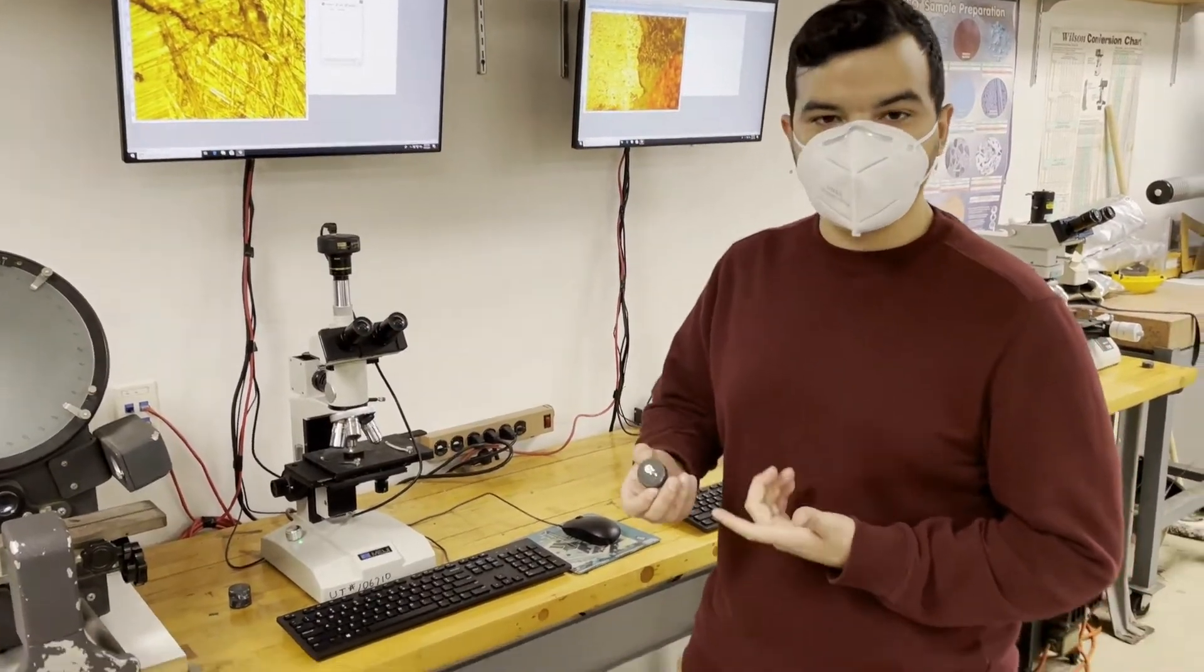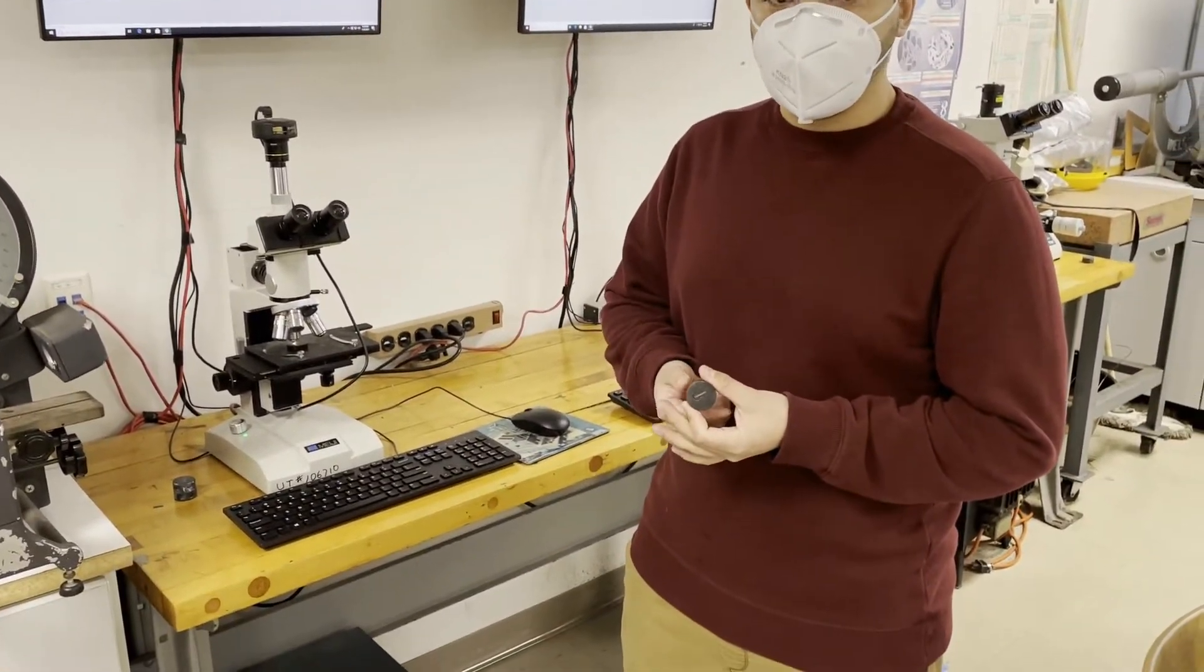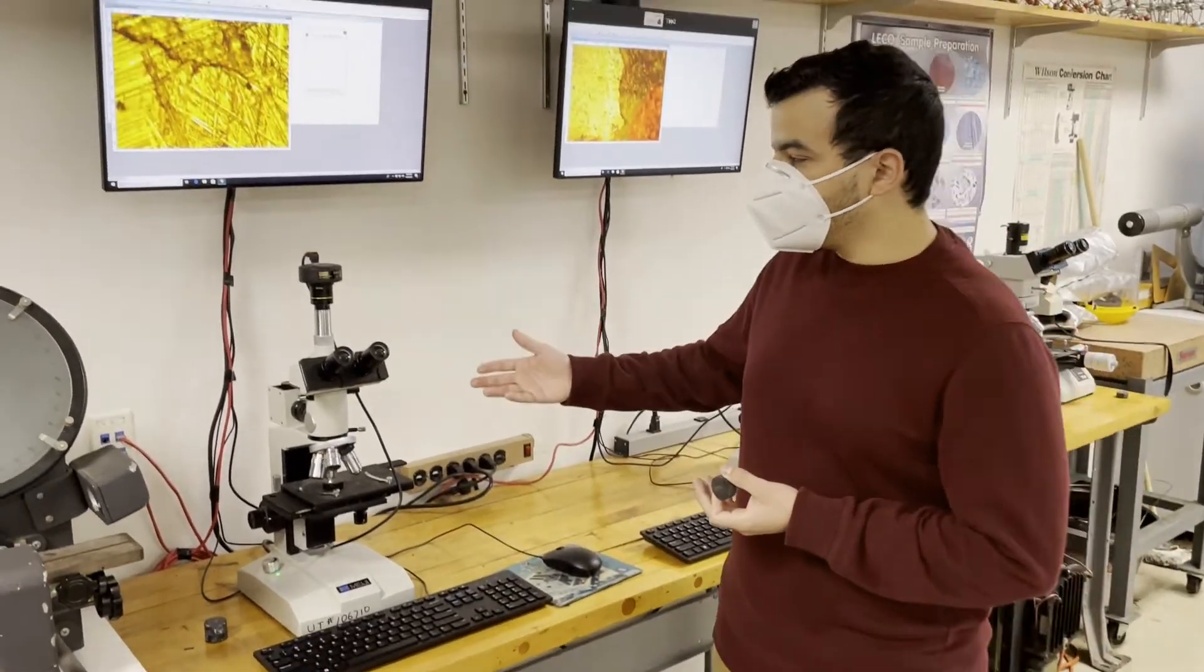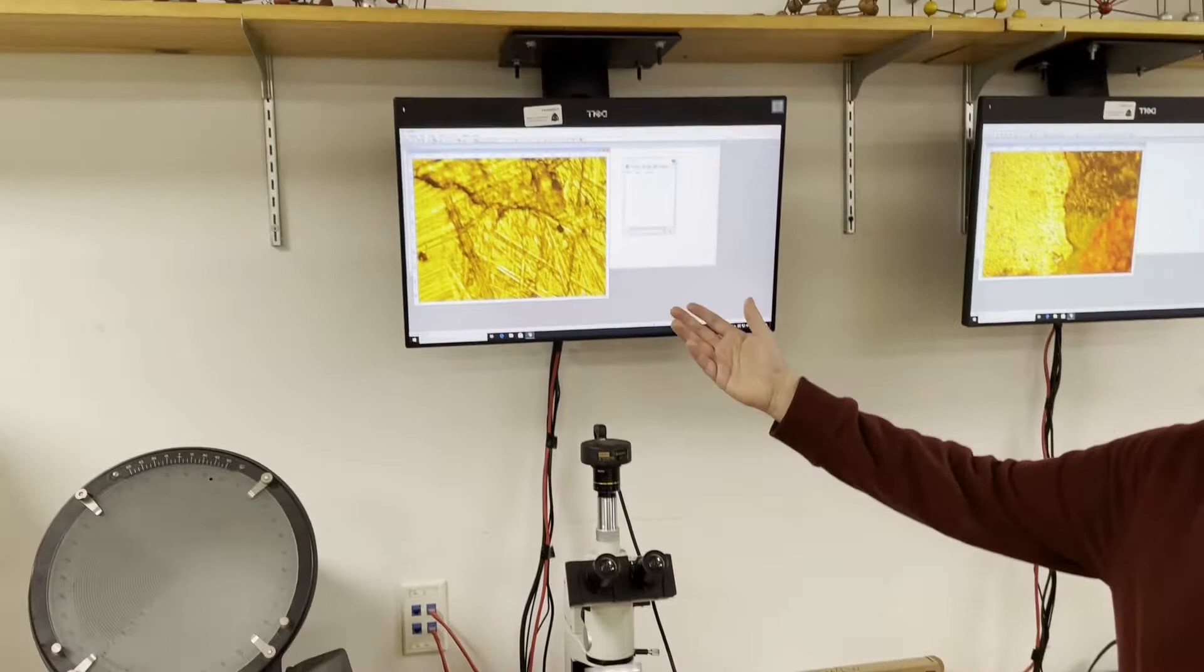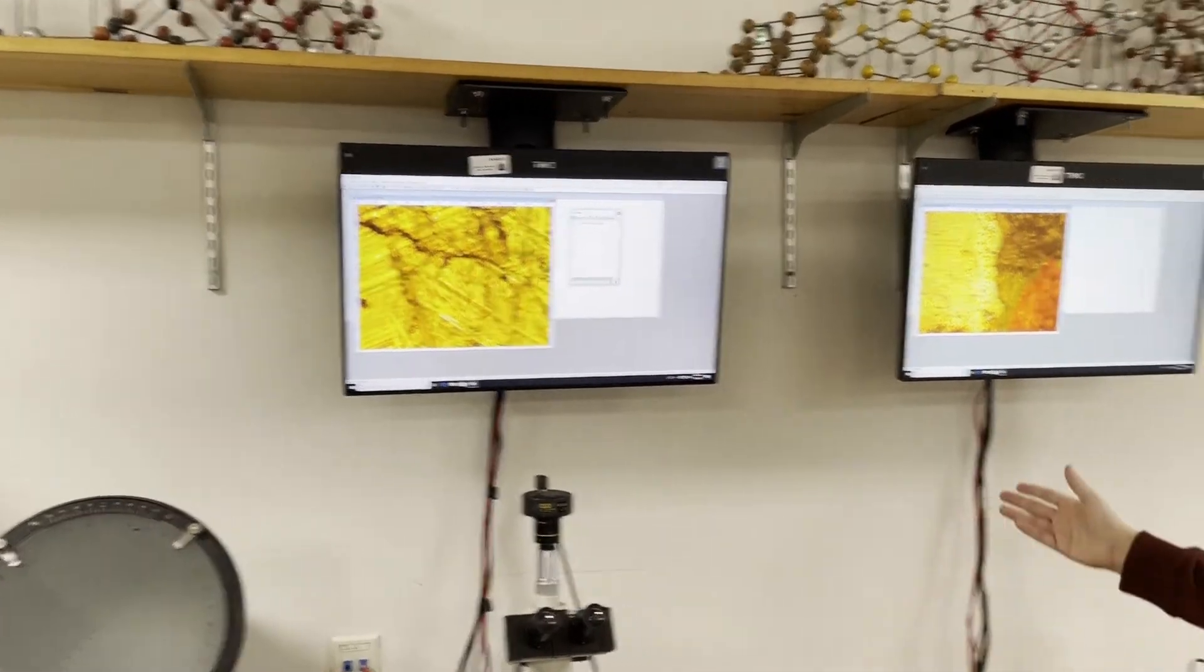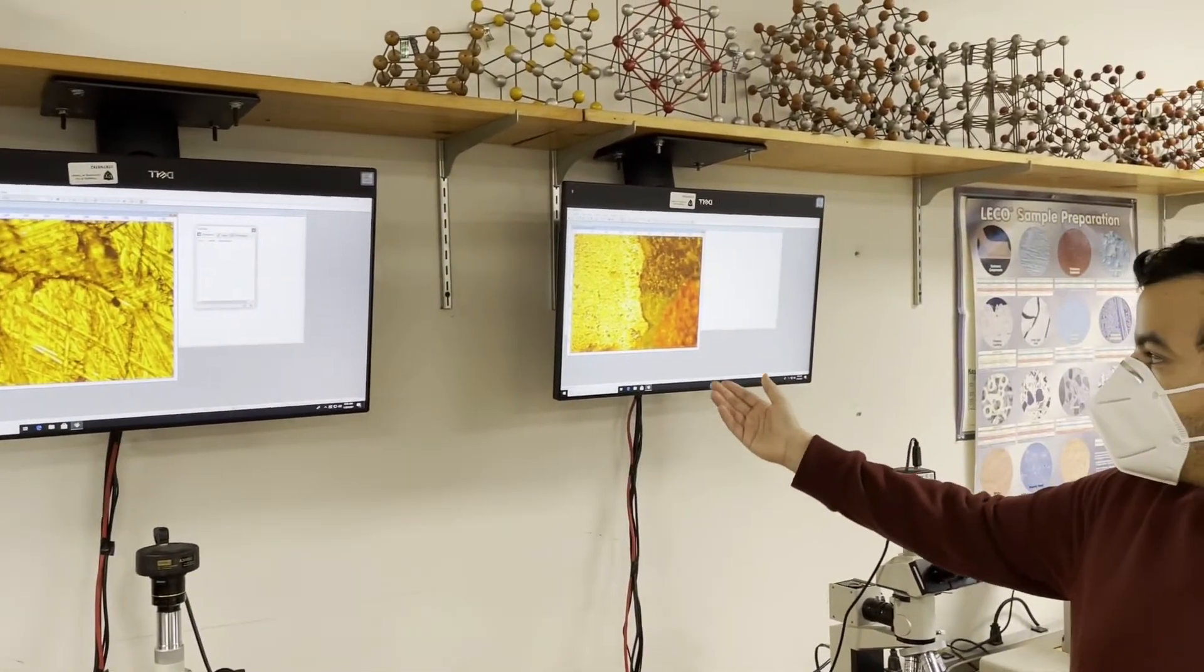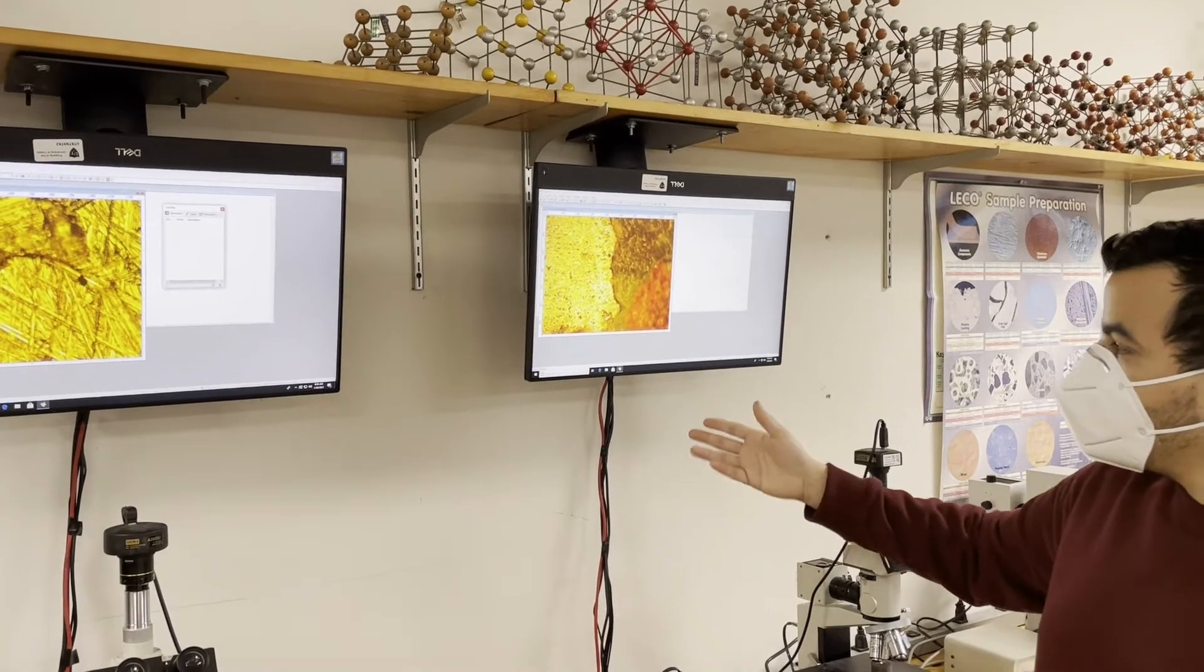After our coupons have been mounted and polished, we can use digital high magnification microscopes to look at things such as the grain structure or the interface between the coupons and the Bakelite.